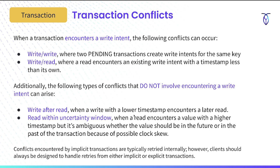In the transaction layer we also deal with transaction conflicts, which occur when a transaction encounters a write. The following types can occur: a write-write conflict happens on the same keys — if two pending transactions create write intents for the same key, that's a conflict. A write followed by a read conflict occurs if a read encounters an existing write intent with a timestamp less than its own.